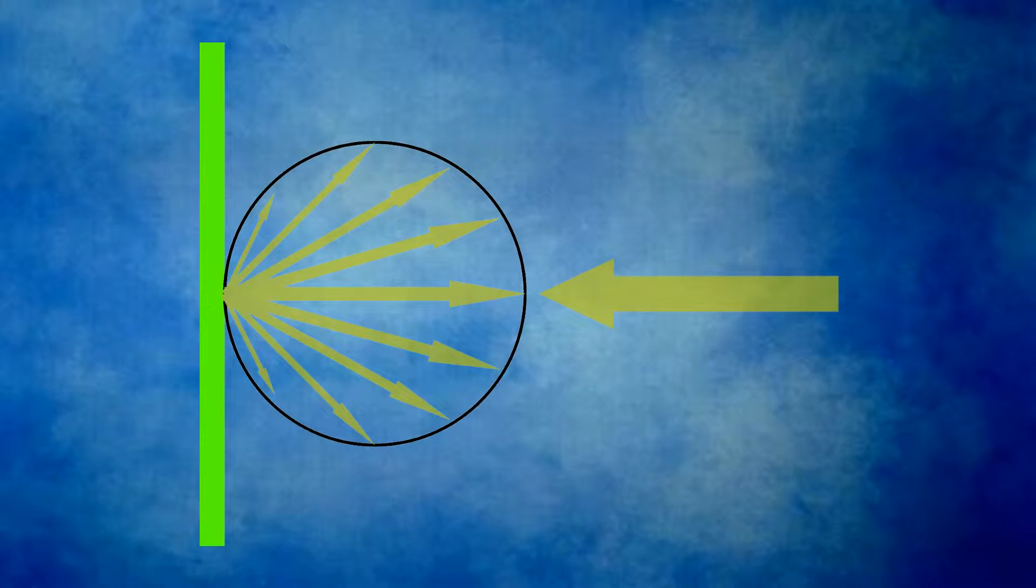There is a special case of a diffusely reflecting surface, where the diffuse light energy varies as the cosine of the angle of reflection. This surface is called Lambertian, and it is considered a perfect reflector because the brightness of the surface is independent of the angle from which it is viewed.